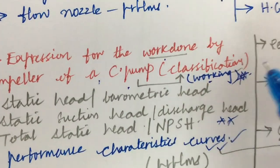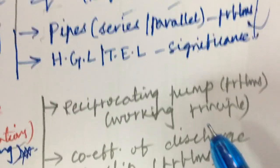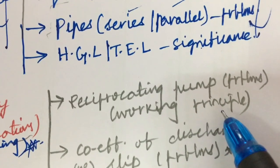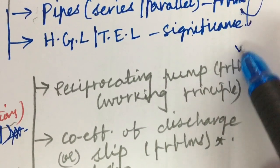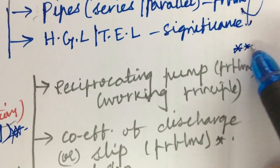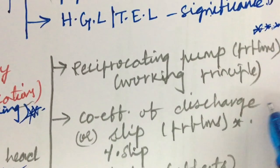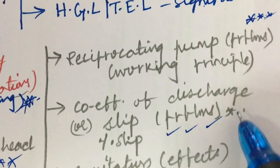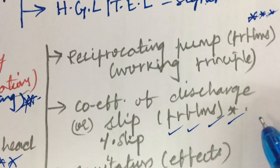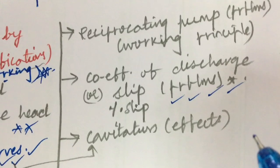The 8th question in your paper is about reciprocating pumps — the working principle, double-acting reciprocating pump problems, finding the coefficient of discharge, slip, and percentage slip for a double-acting reciprocating pump. Cavitation and its effects are also very important gunshot questions.